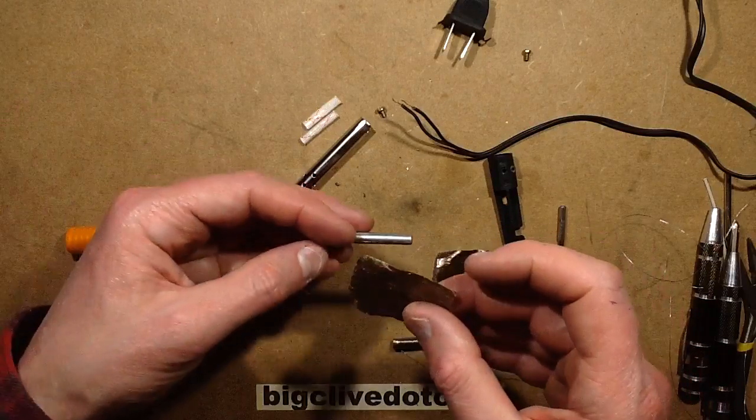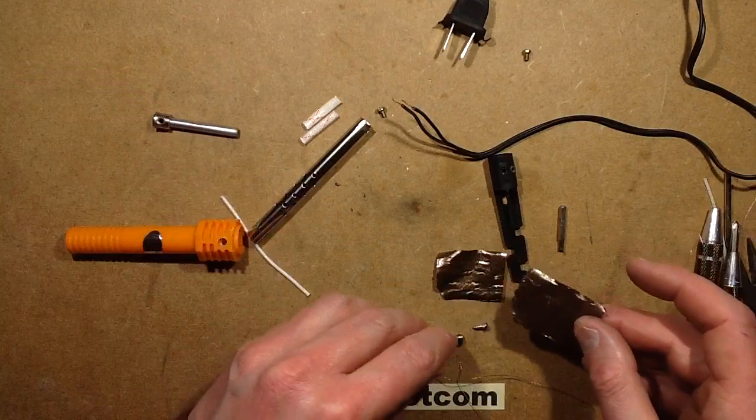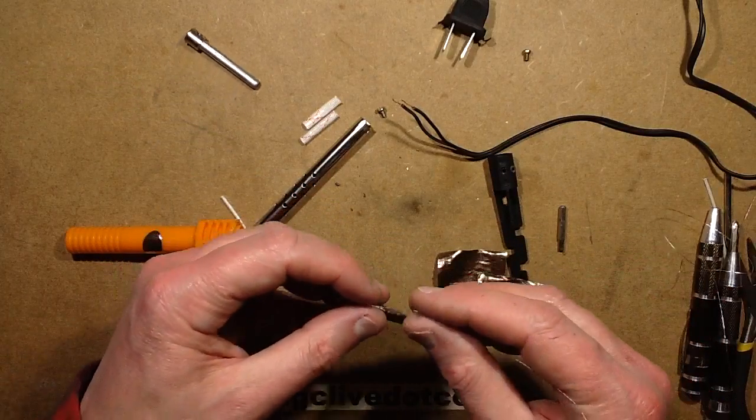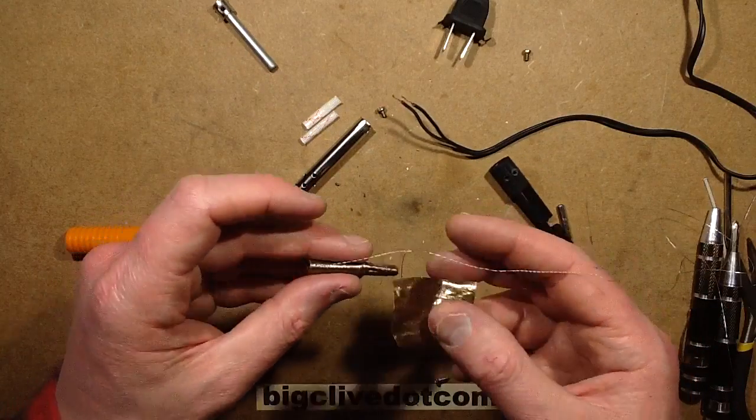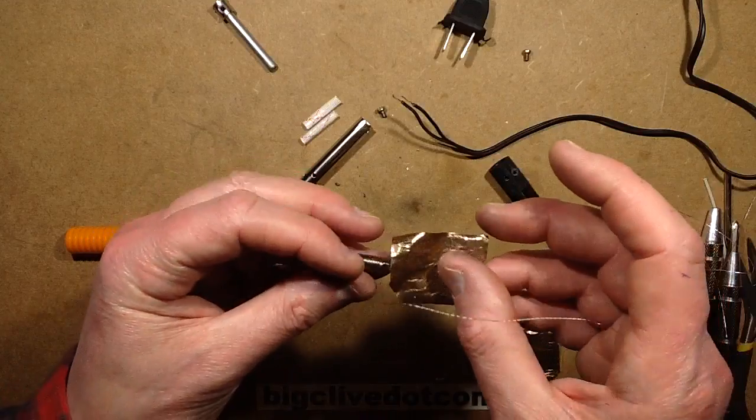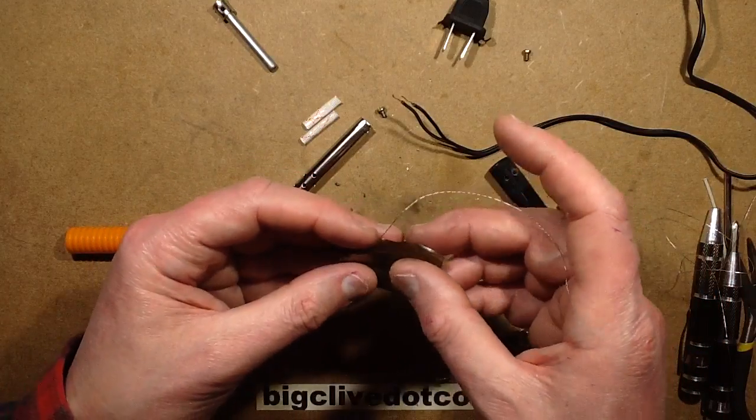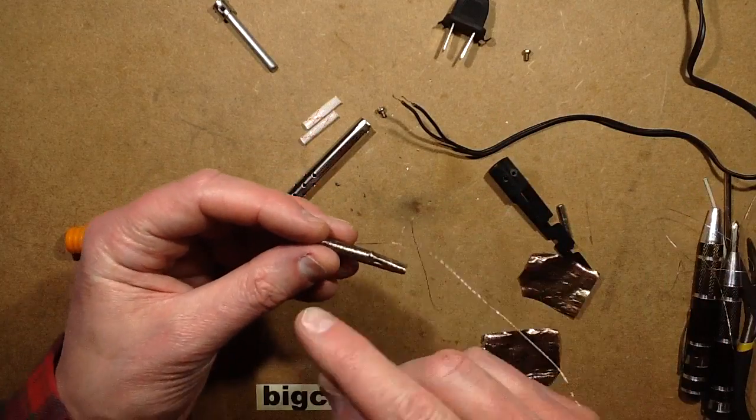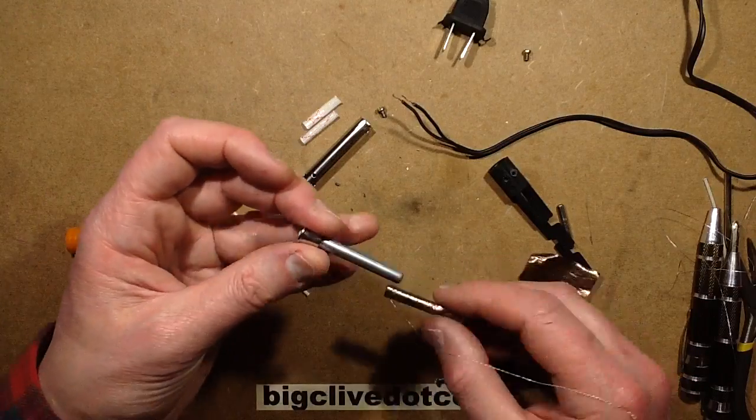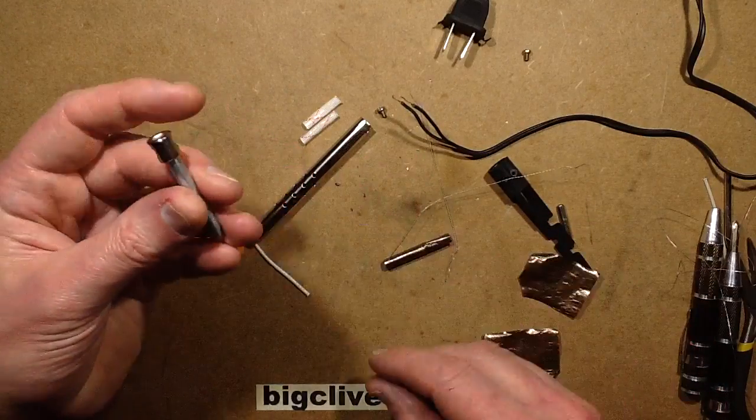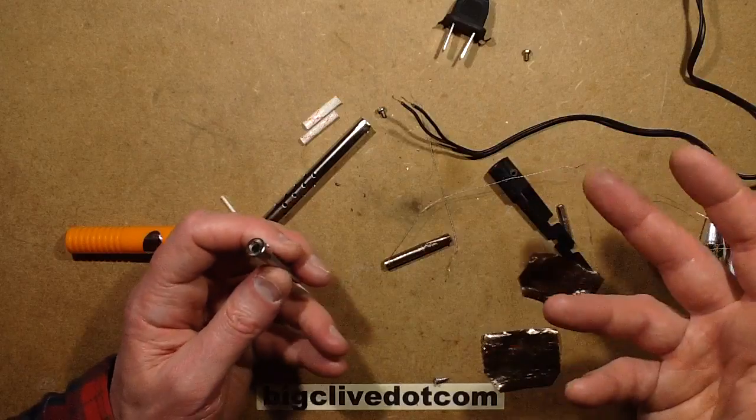So there was a layer of the mica insulation over what turned out to be, well, one layer over the whole lot, then another layer to separate the return wire from one end of the heating element from the rest of the heating element, and then finally the heating element wound round a layer of mica that was directly on the support for the soldering tip.